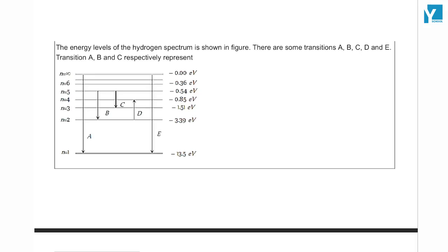The energy levels of the hydrogen spectrum is shown in the figure. There are some transitions A, B, C, D, E. Transitions A, B, and C respectively represent... so let's see A, B, and C.